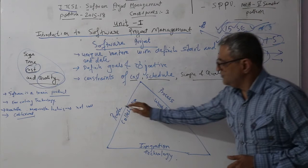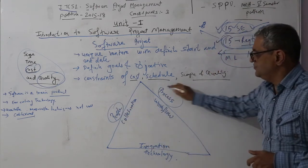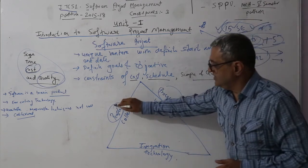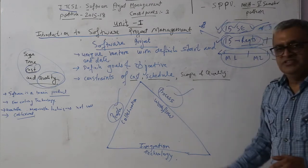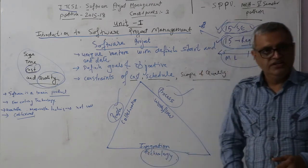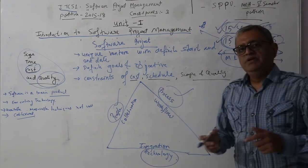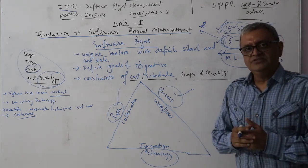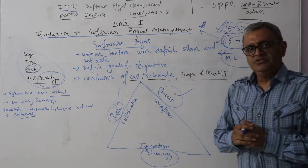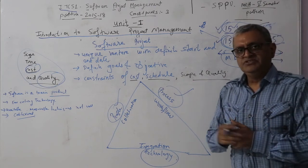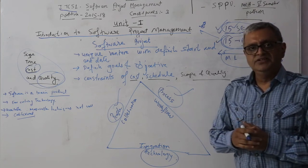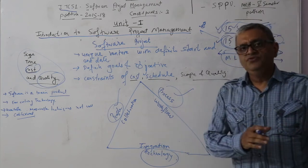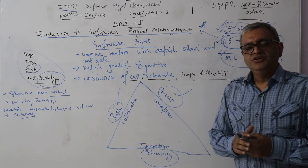I typically represent this as a triangle. Software project management has three sides: one is People, another is Process, and the third is Technology. People — developers, testers, designers, architects — collaborate with each other. There are numerous technologies used which need to be integrated.